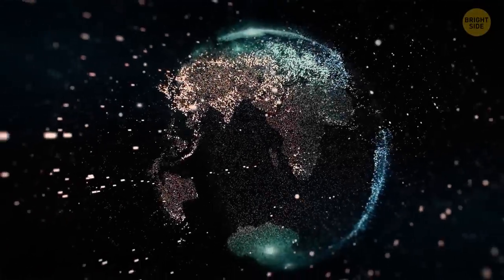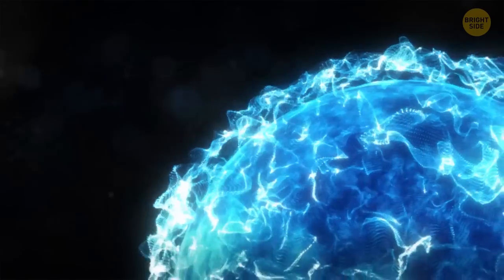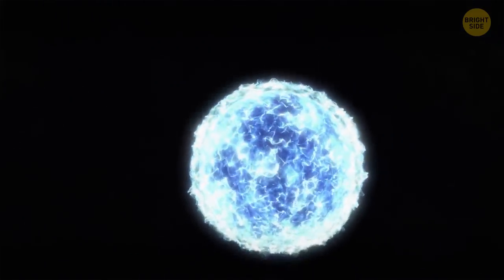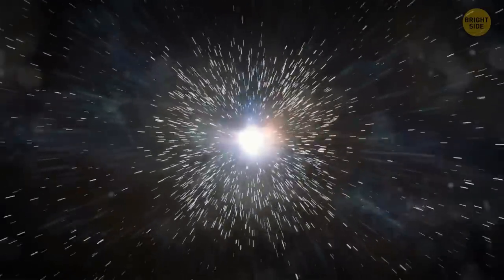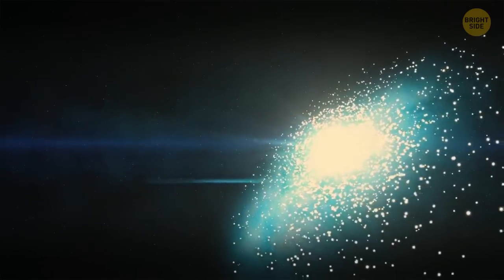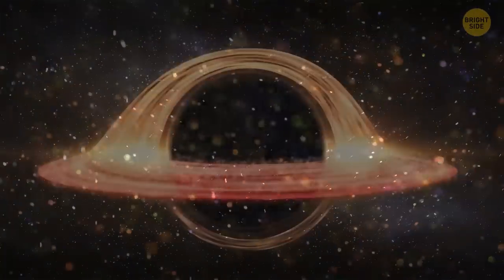All space objects have been formed thanks to gravity pulling matter together. If there's even the slightest rotation at the beginning, the spin rate increases with time, especially when an object starts collapsing. That's why all space objects rotate, including dust particles and even black holes.